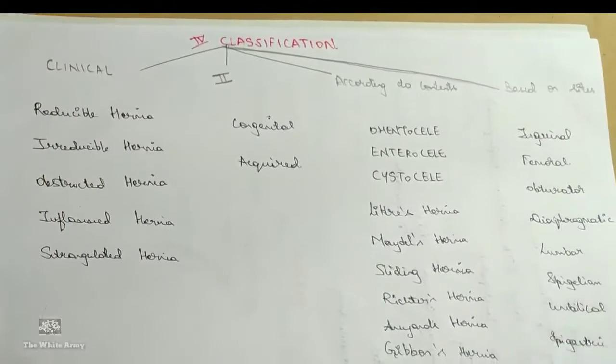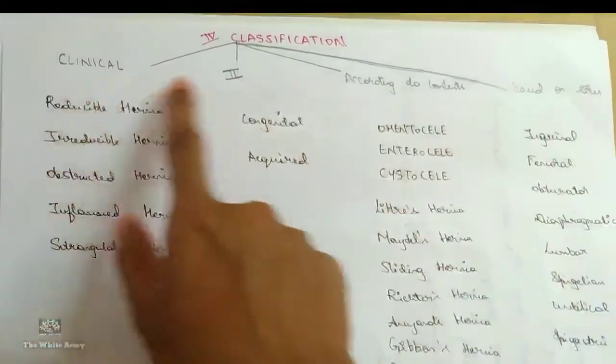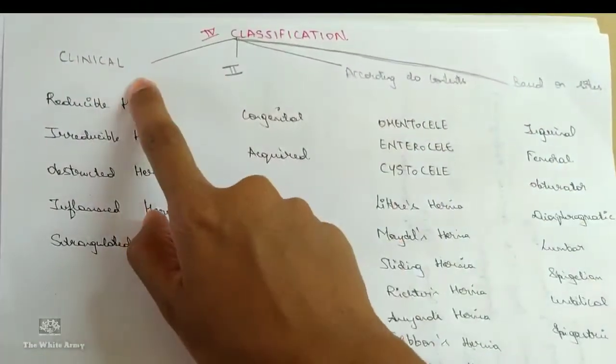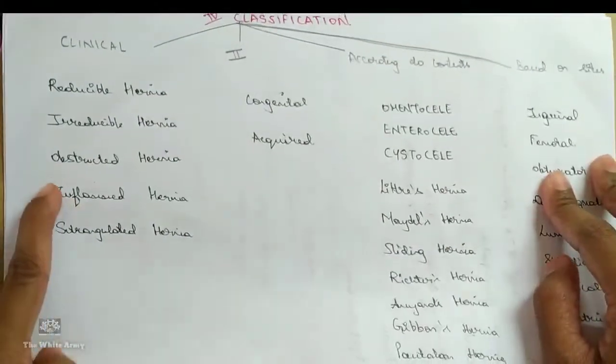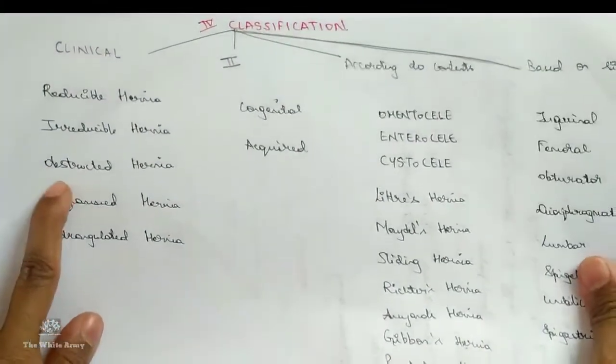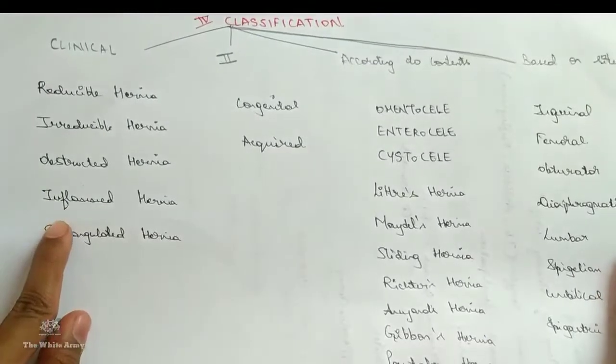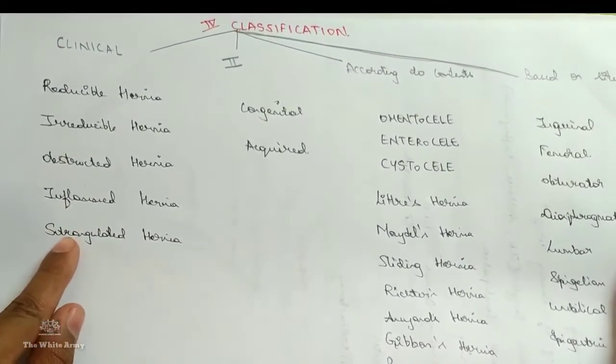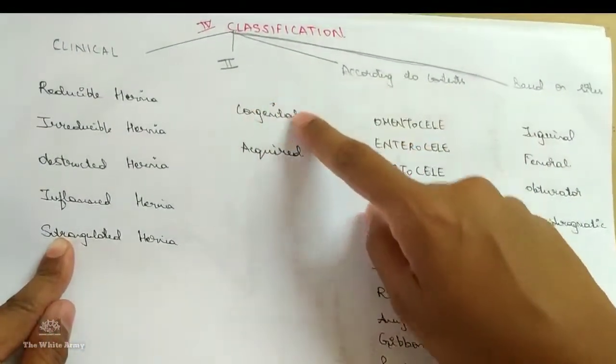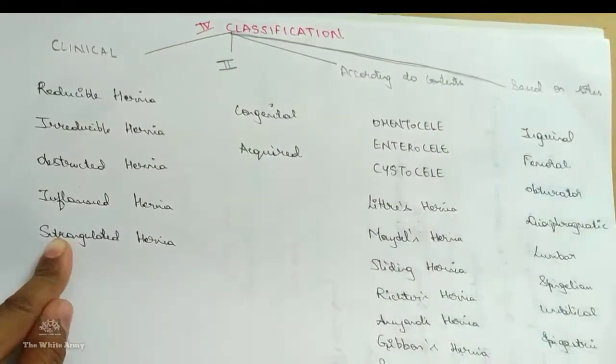Classification. Hernia broadly is classified under four headings. One, clinical: Reducible hernia, irreducible hernia, obstructed hernia, inflammable hernia, strangulated hernia and second, it may be congenital or acquired.